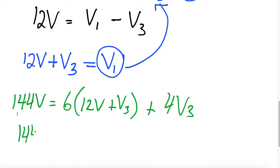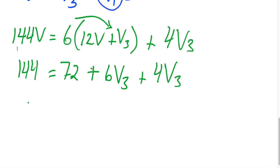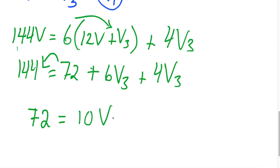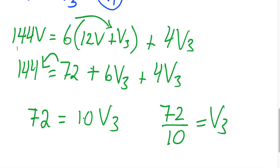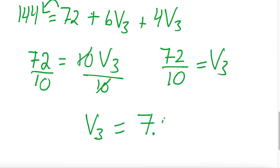Expanding: 144 volts equals 72 volts plus 6·V3 plus 4·V3. Subtracting 72 from both sides: 72 equals 10·V3. Dividing both sides by 10: V3 equals 7.2 volts.